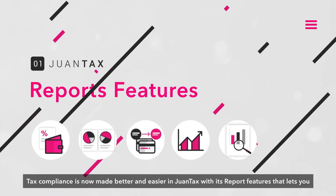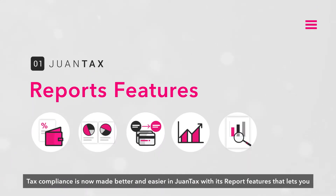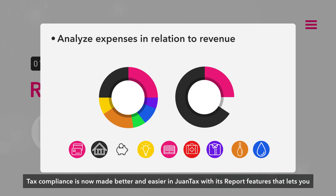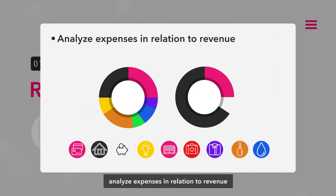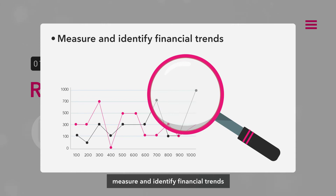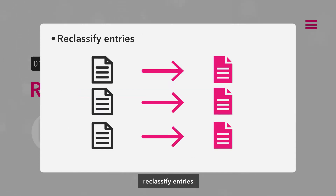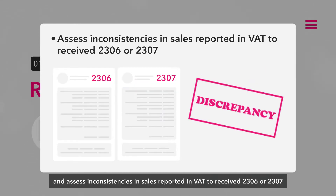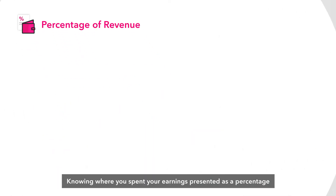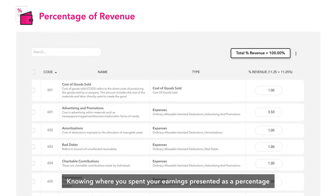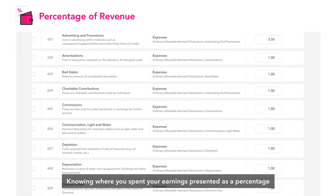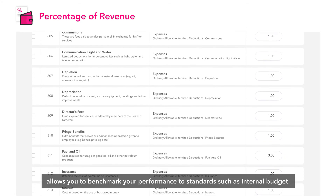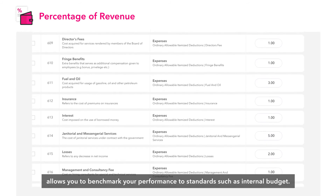Tax compliance is now made better and easier in OneTax with its report features that lets you analyze expenses in relation to revenue, measure and identify financial trends, reclassify entries, evaluate expanded withholding taxes, and assess inconsistencies in sales reported in VAT to received 2306 or 2307. Knowing where you spent your earnings, presented as a percentage, allows you to benchmark your performance to standards such as internal budget.